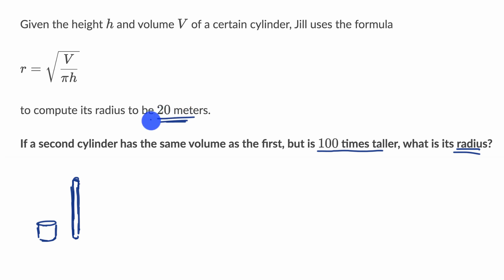But how do we figure out what that could be? Well, now we can go back to the formula. We know that Jill calculated that 20 meters is the radius. So 20 equals the square root of V over pi h.